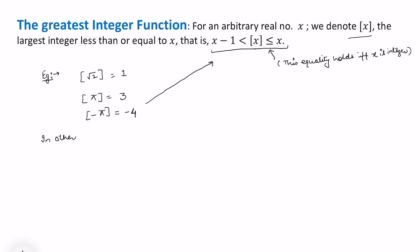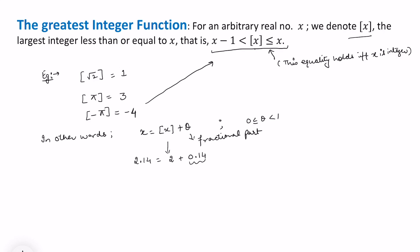We may also use the definition in the form: we can write x as the greatest integer of x plus some theta, where theta lies between 0 and 1. Theta is nothing but the fractional part. For example, if x is 2.14, the greatest integer function gives 2 and theta becomes 0.14, which is the fractional part. Theta equals 0 only when x is an integer — for example if x is 5, the greatest integer is also 5 and theta is 0.